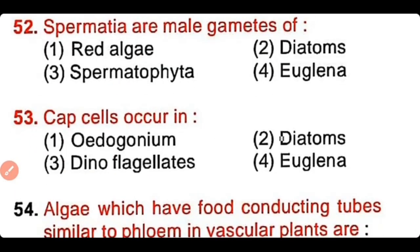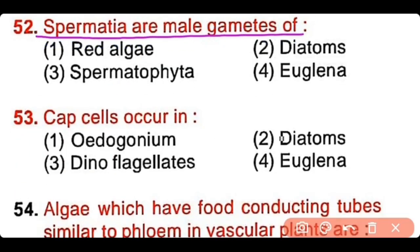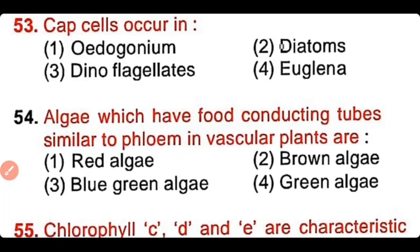Question number 52: Spermatia are male gametes of red algae, diatoms, spermatophyta, or Euglena? The correct answer is option 1. Red algae have male gametes known as spermatia.